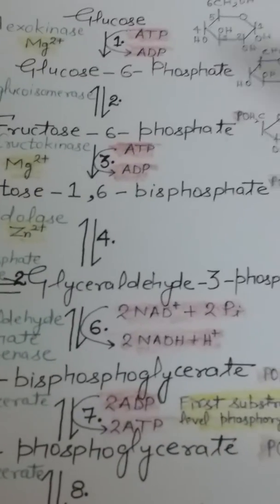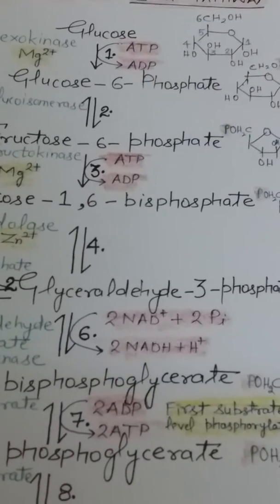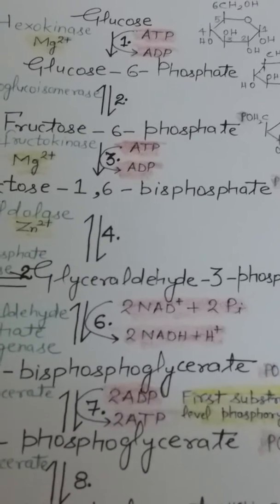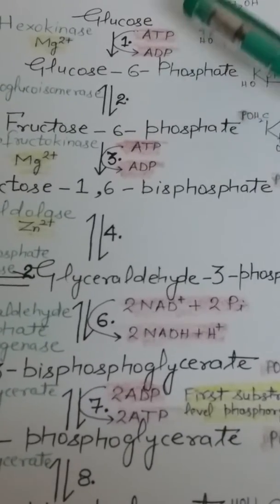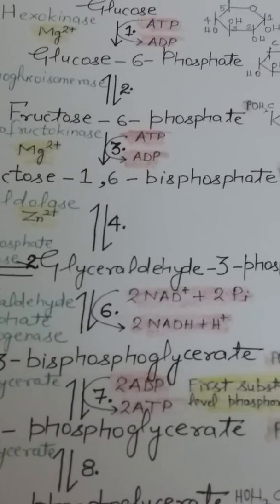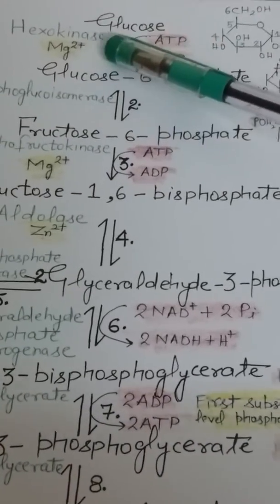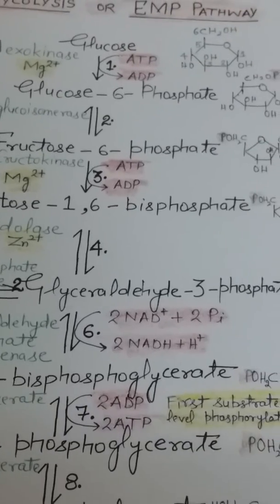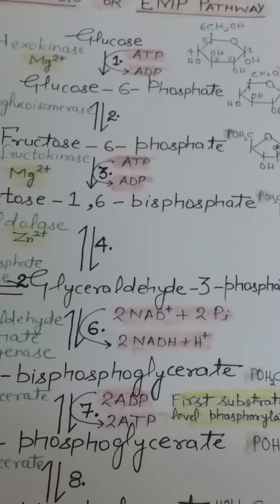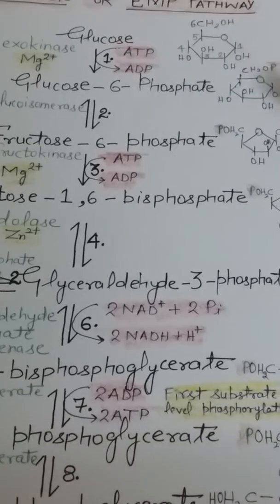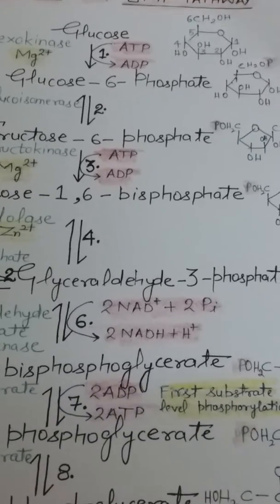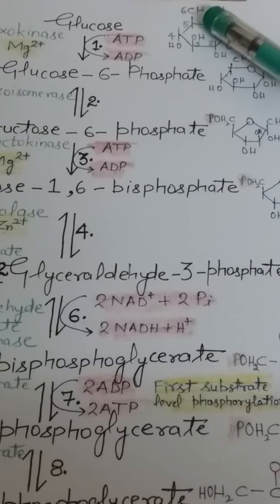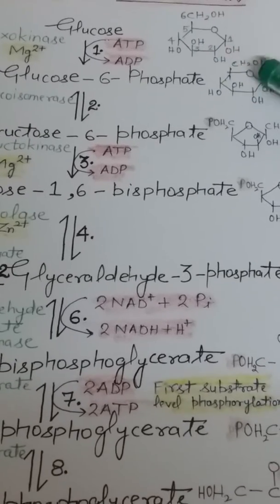Glycolysis starts with glucose. The first step is phosphorylation — the process of adding a phosphate group to a molecule. This phosphate group is derived from ATP. The enzyme hexokinase is used to convert glucose to glucose-6-phosphate. The phosphate group is taken from ATP and transferred onto the sixth carbon of the glucose molecule to form glucose-6-phosphate.